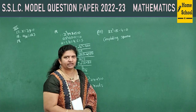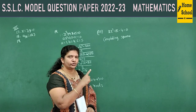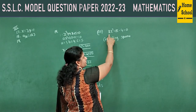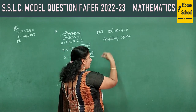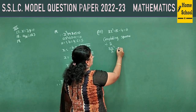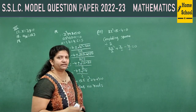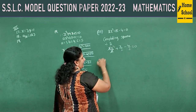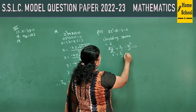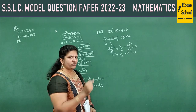First rule: check if the coefficient of x² is 1. Here it is 2, not 1. So divide the whole equation by 2: x² + x/2 − 2 = 0. Now the first step is complete — the x² coefficient is 1.